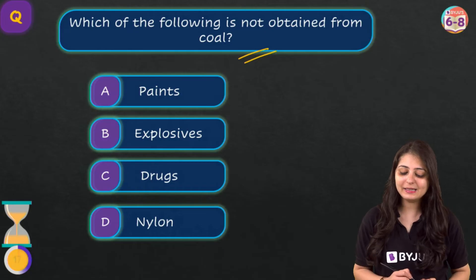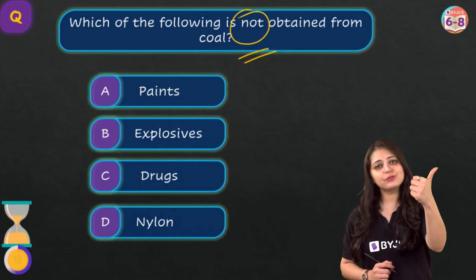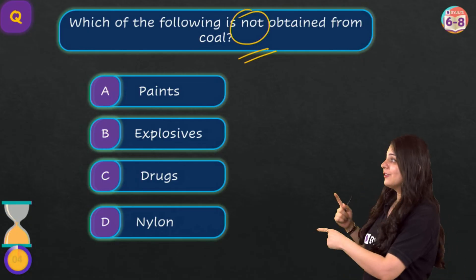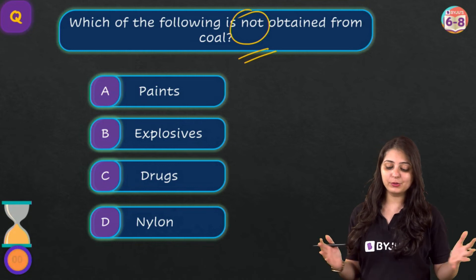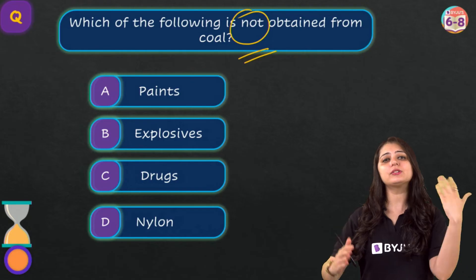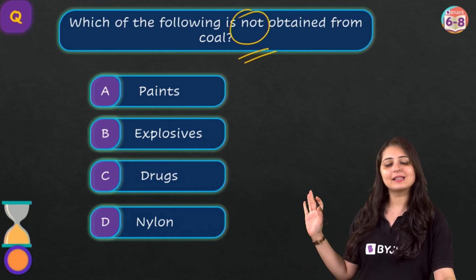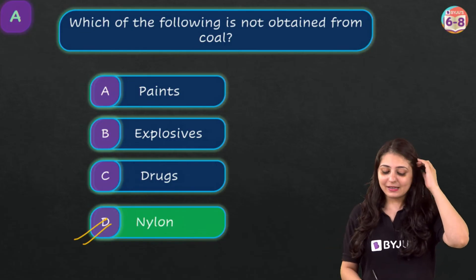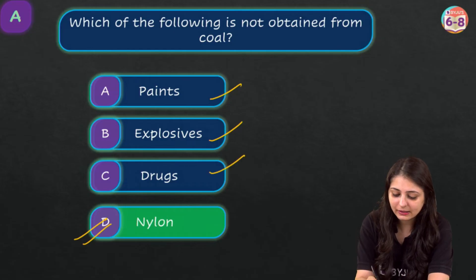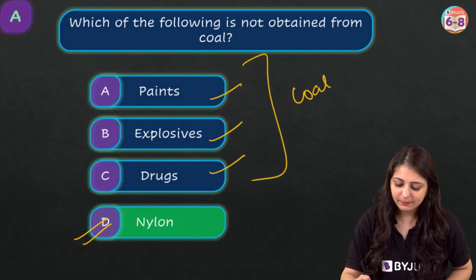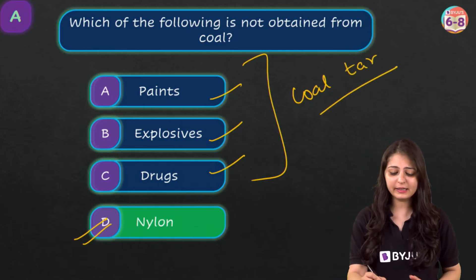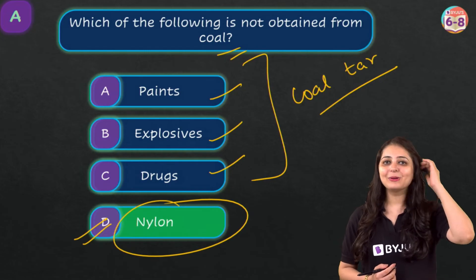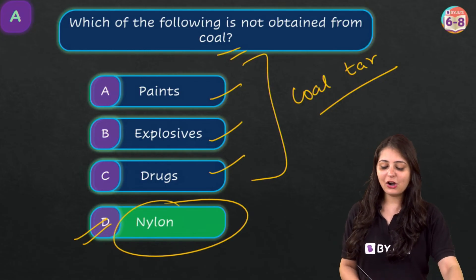The key word is 'not' — read the question very carefully. Post your answers in the comment section. The correct answer is option D — nylon. Paints, explosives and drugs are all obtained from coal tar, which is a product of coal. But nylon fiber is actually something obtained from petrochemicals, not from coal.